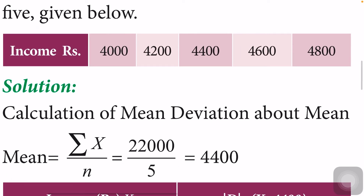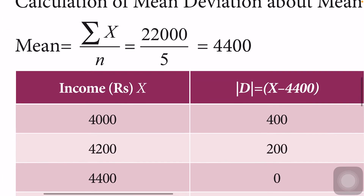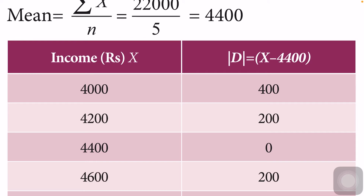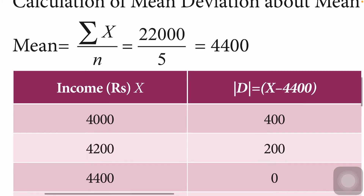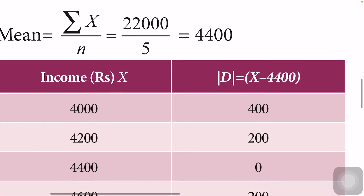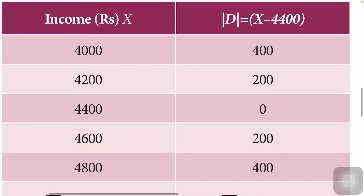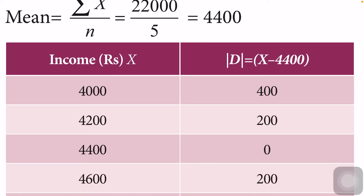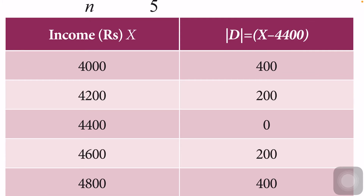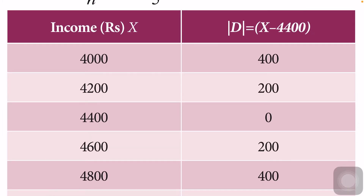First we have to calculate the mean. Adding all 5 data values, I get 22,000. So 22,000 divided by 5 is equal to 4,400. The income values are tabulated and D equals x minus x-bar, that is modulus D equals modulus (x minus x-bar). Here x is the observation and x-bar is the mean value of 4,400, so we subtract 4,400 from all income values.